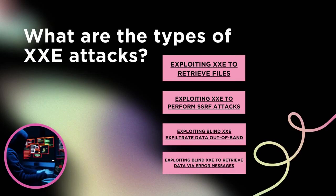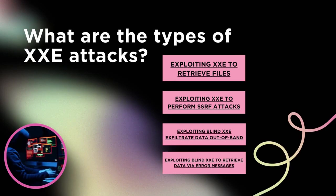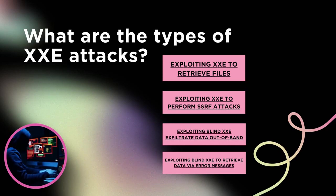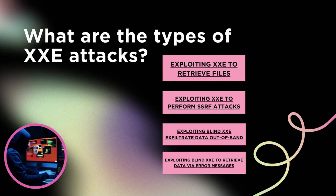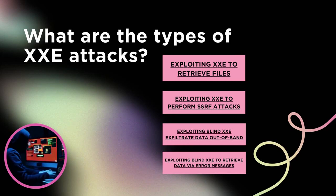There are various types of XXE attacks. First, exploiting XXE to retrieve files, where an external entity is defined containing the contents of a file and returned in the application's response. Then, exploiting XXE to perform SSRF attacks, where an external entity is defined based on a URL to a backend system. Then, exploiting blind XXE to exfiltrate data out of band, where sensitive data is transmitted from the application server to a system that the attacker controls. And lastly, exploiting blind XXE to retrieve data via error messages, where the attacker can trigger a parsing error message containing sensitive data.